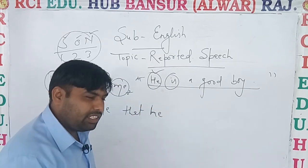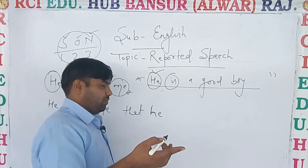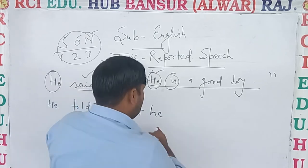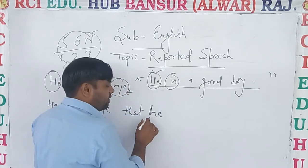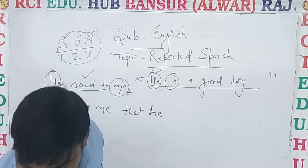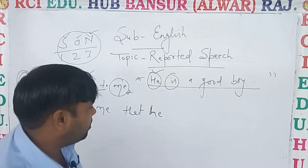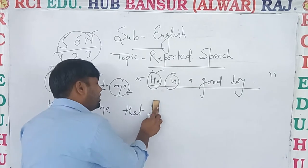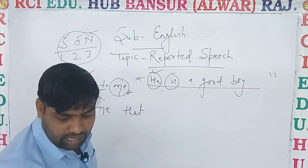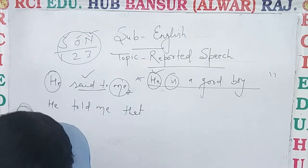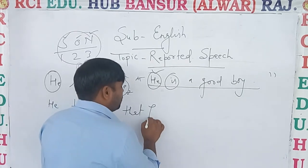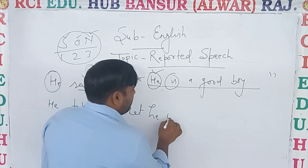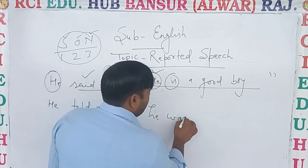Is, am, are change into was, were. With 'he' and singular number, we will use 'was'. He was.